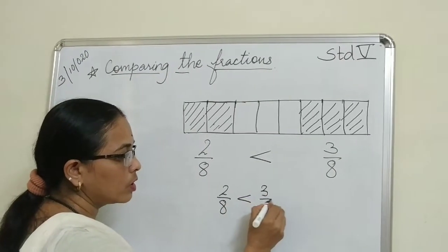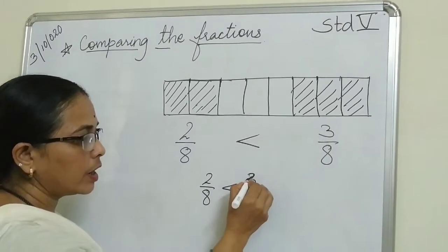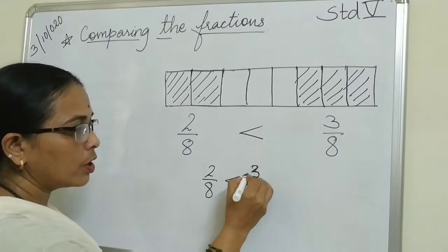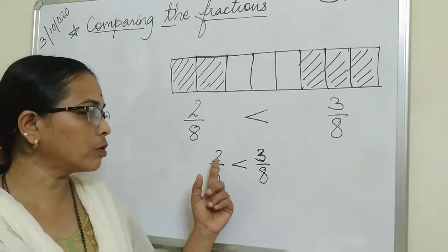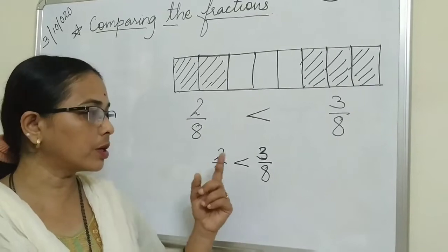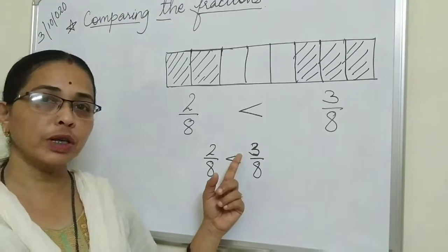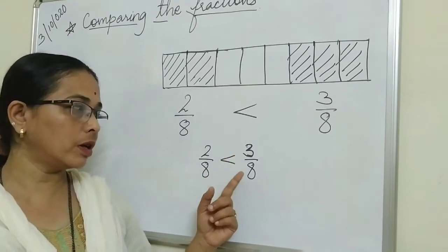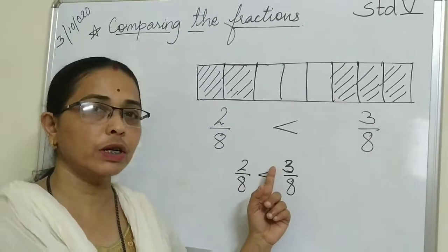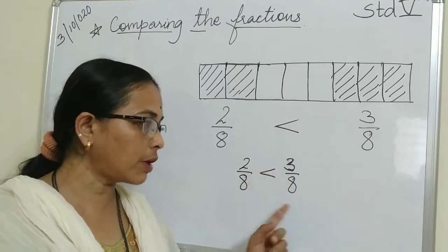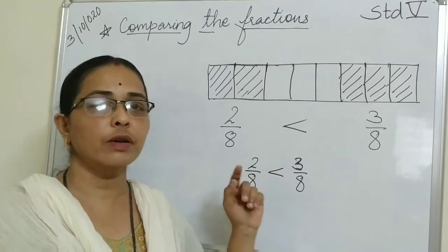So that means 2 upon 8 is smaller than 3 upon 8. Here what you have to see is the numerator. If denominators are same and the numerator is bigger, that means that fraction is the bigger fraction.